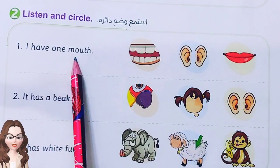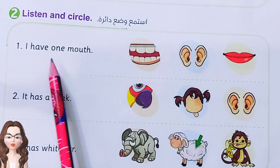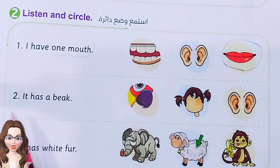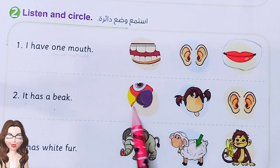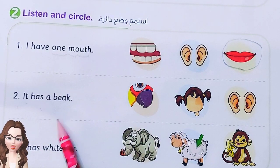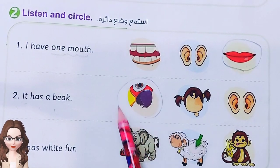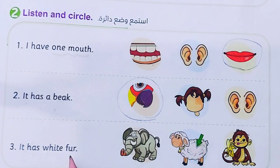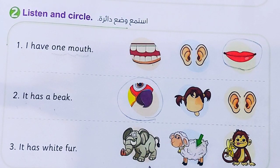Number 2: listen and circle. Number 1 — I have one mouth. You can choose between these pictures. I have one mouth — yes, it's one mouth. Number 2 — it has a beak. Which picture is true? Yes, this one — circle it! Number 3 — it has white fur. It has white fur — where is the correct picture? Yes, this one!